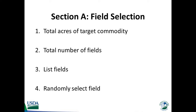When collecting data for ARMS Phase 2, efforts are concentrated on collecting information from a single field. In Section A, we first must record the total acres of the target commodity and the total number of fields planted to the target commodity for the current year. Once this is complete, a list is made to identify all of the fields planted to the target crop, and then a procedure is used to randomly select one of those fields from all the operation's fields to be the focus for this survey.